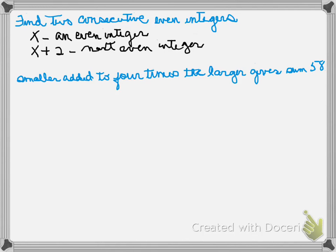So my two consecutive integers are X and X plus 2. Now let's take the rest of the statement: the smaller, that would be X, added to 4 times the larger, X plus 2, equals 58. So there's our linear equation to solve.